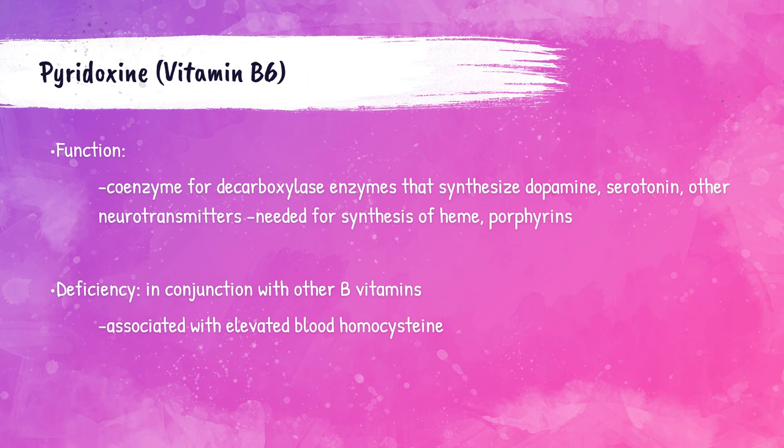Vitamin B-6, or pyridoxine, is a vitamin that serves as a coenzyme for the production of dopamine and serotonin. It's also needed for the production of heme molecules and porphyrins — you'll learn about heme and porphyrins in the hematology lectures. Typically, patients that have a deficiency of vitamin B-6 also have other B vitamin deficiencies.